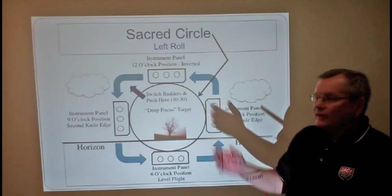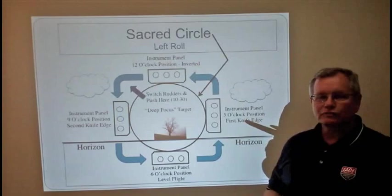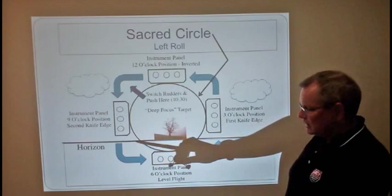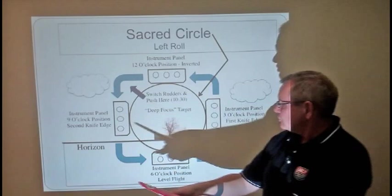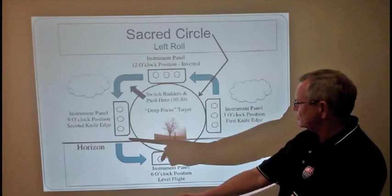Alan Cassidy, the British aerobatic champion in his book Better Aerobatics, has come up with a term called the sacred circle. That is what is drawn by the tip of the nose. Here's the instrument panel at the beginning. As we're making a left roll, we're rolling continuously around. We're going to compare this to a clock.